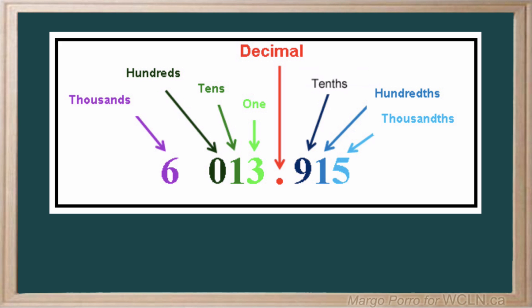A number in the first place to the right of the decimal represents tenths. The nine here represents nine-tenths. A number in the second place represents hundredths, so the one here represents one one-hundredth.